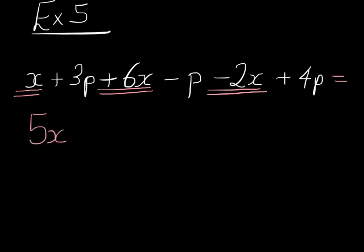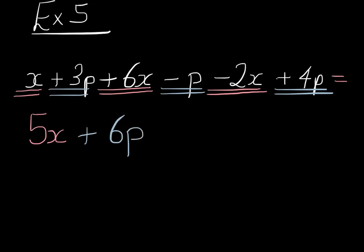And with the p's we've got positive p and we take away a p, so that's going to be 2p. But then we add on a 4p, so we'd have plus 6p. And so we're done for this particular video. A brief revision introduction to collecting like terms. Thank you for watching.